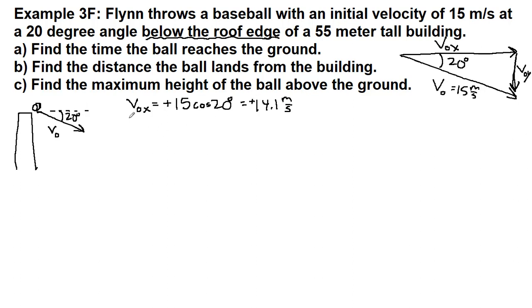The initial y velocity, on the other hand, because I have drawn it downwards, needs a minus sign. The 15 is still the hypotenuse, but this is the opposite side, so it's the sine of 20 degrees. Really important: we have this minus sign, and then it's 5.13 meters per second.